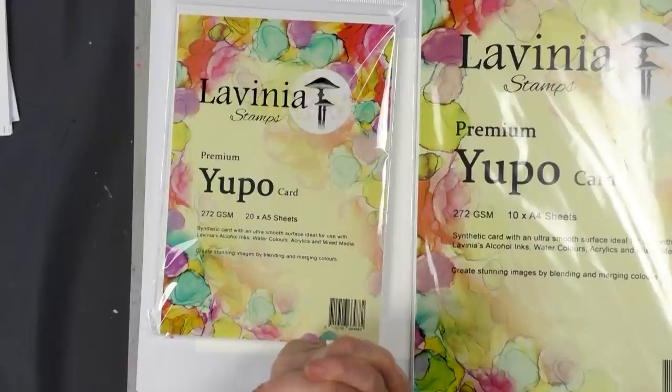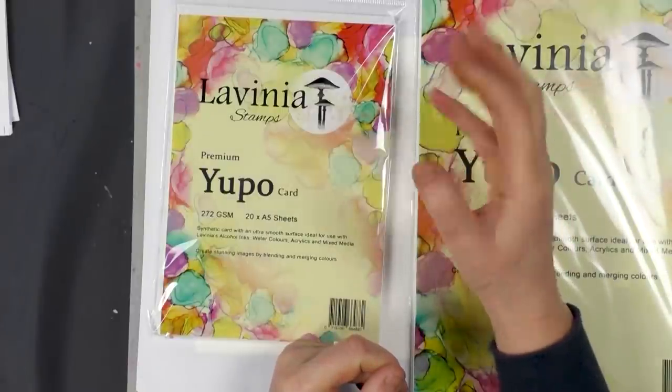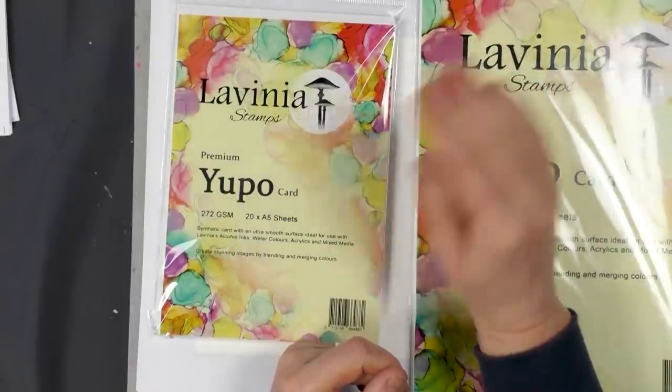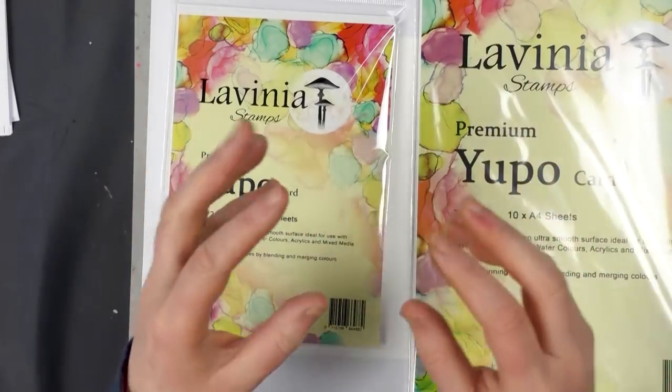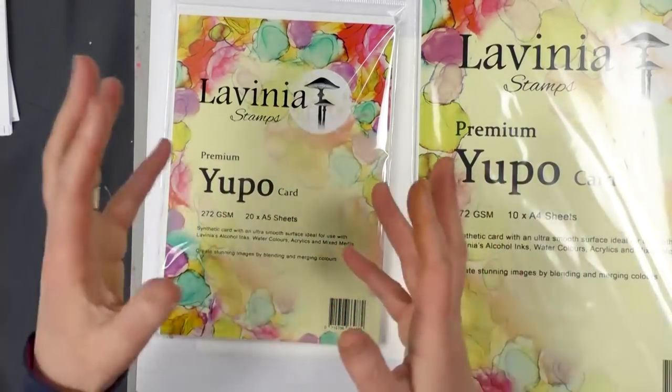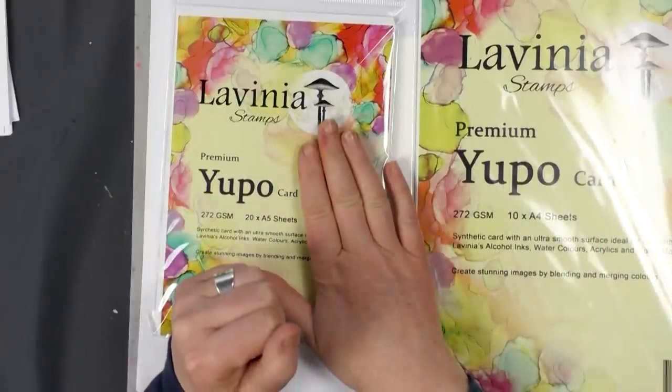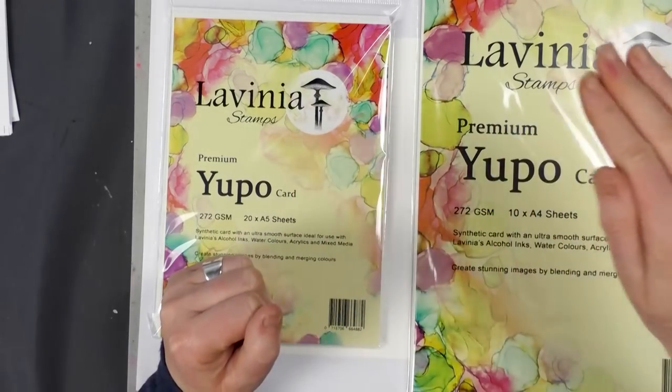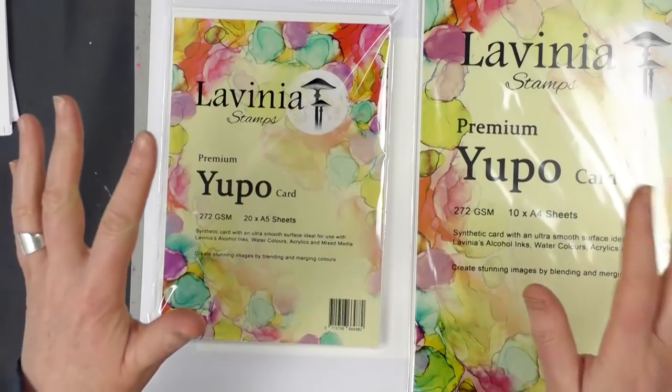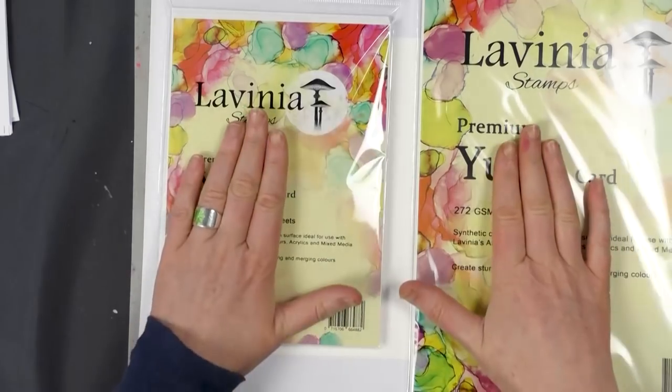I know that we've had a few questions on how it works. If you were to put alcohol ink on just a normal porous card then you wouldn't be able to move it anywhere. It would just stay where it was, soak in and you wouldn't get that lovely smoky movement going across the card. So with it being a non-porous card, it means it stays on the surface until the alcohol evaporates and then your image will start to set onto your card.